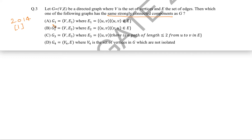Let's start with G1, which equals (V, E1). The set of vertices V is the same as G, but E1 is defined as {(u, v) where (u, v) does not belong to E}. So E1 contains all edges not present in the original graph G.